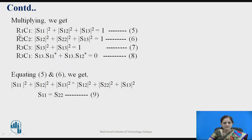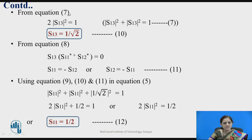Similarly, calculating the equation for R2, C2 and comparing equations 5 and 6 — equation 5 has S11, S12, S13 and equation 6 has S12, S22, S13 — we can write S11² = S22². For R3, C3: S13² + S13² = 1. Taking combination R3, C1, we write equation 8. Equating equations 5 and 6, S11² = S22², therefore S11 = S22. From equation 7, we calculate S13 = 1/√2.